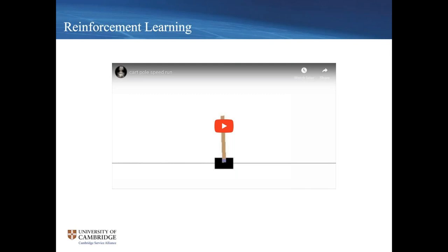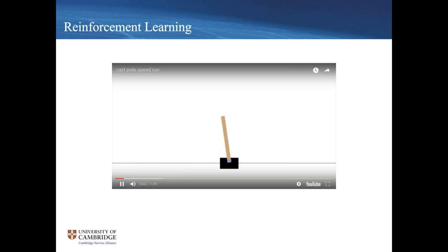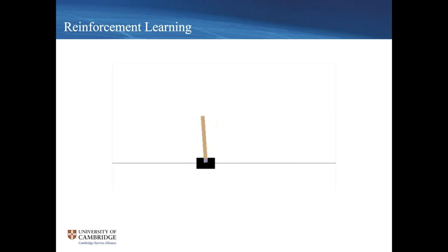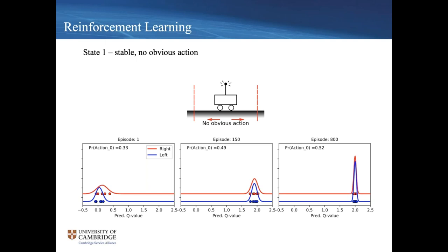This is one of my favorite experiments from my PhD. We trained the agent to balance the pole and came up with three types of situation to assess whether it had learned uncertainty correctly. The first is a stable state: the cart is right in the middle of the environment and the pole is perfectly balanced — it doesn't really matter whether it moves left or right, and the agent would have seen this state many times during training.